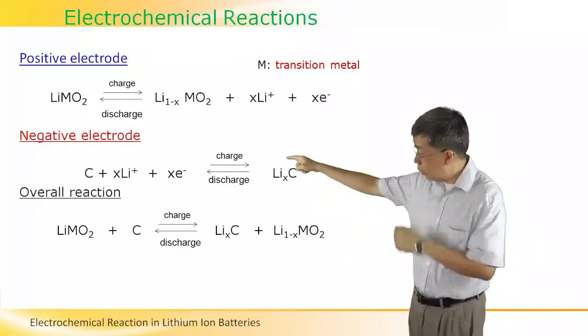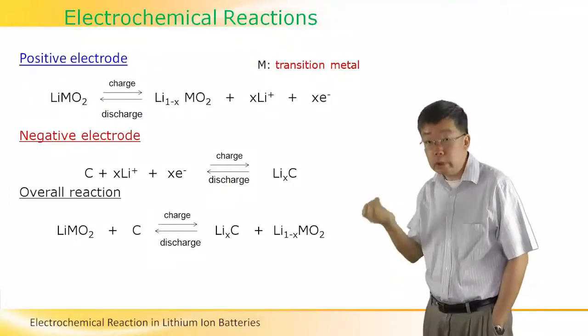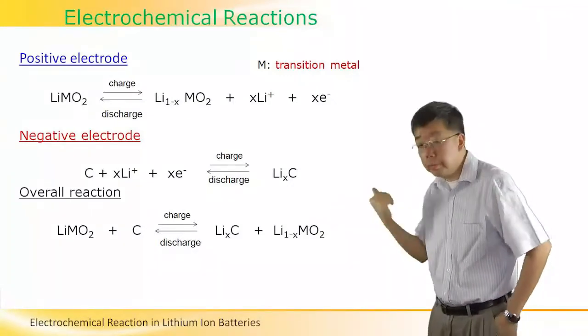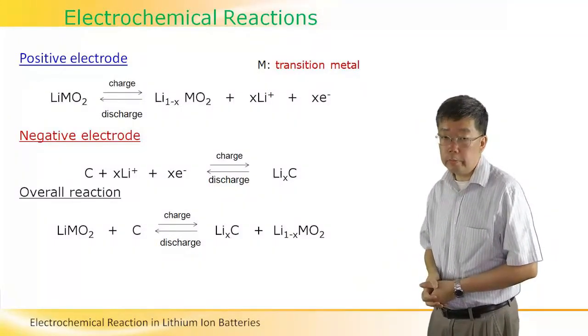Notice that the M is a transition metal such as cobalt, but it could be other transition metals.